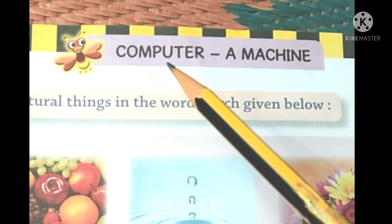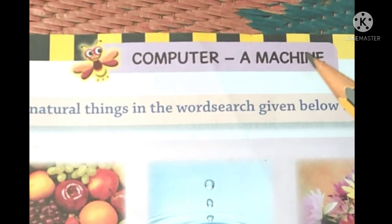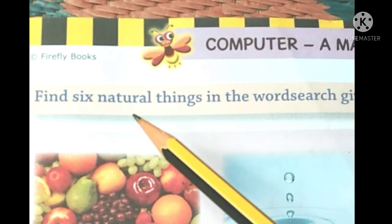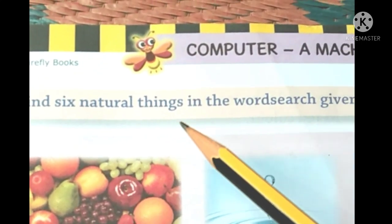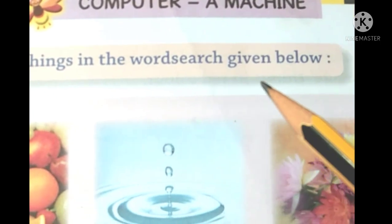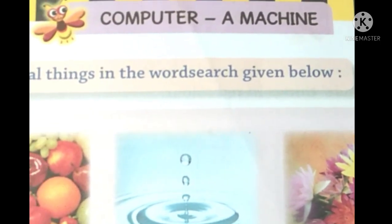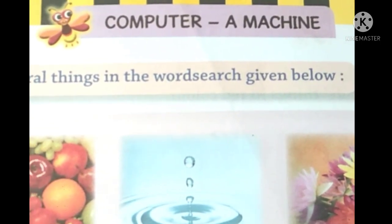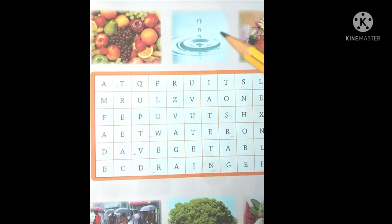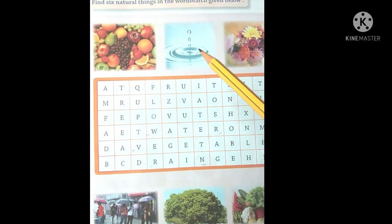Now look at here. Computer: A Machine — Find six natural things in the word search given below. Yaha pe six natural things diya gaya hai.